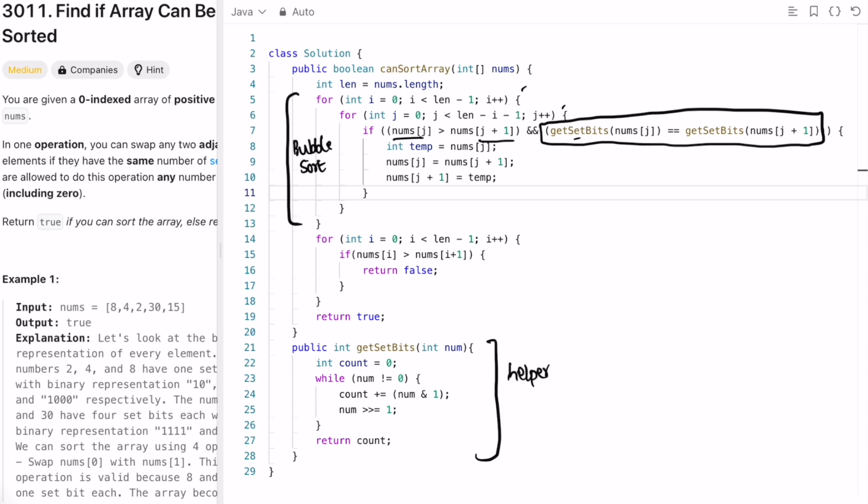So this is the helper function which will return us the number of set bits for our integer num. This will give us the least significant bit, that is the rightmost bit of our number, and adding it to the count. So if this is equal to 1, only this 1 will be added to the count. And then I'm shifting that digit so that we decrease the size and this for loop will run until the num is not equal to 0.